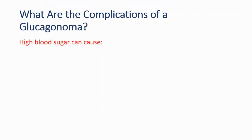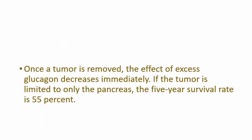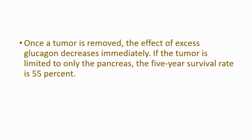The complications are generally the same as diabetes because high blood sugar is a common factor. Nerve damage, blindness, metabolic problems, and brain damage can be seen. For prognosis, when we remove the tumor, the effect of excess glucagon decreases immediately. If the tumor is limited to only the pancreas, the 5-year survival rate is 55%.